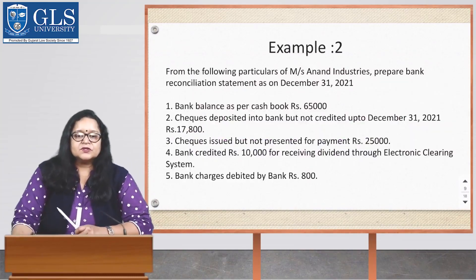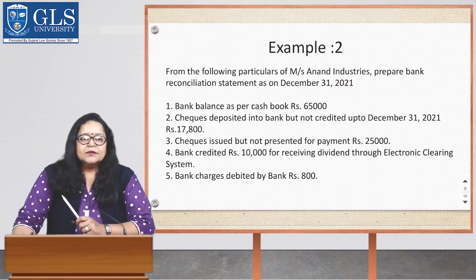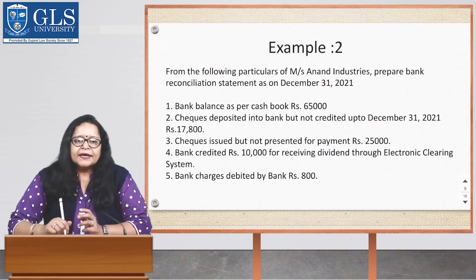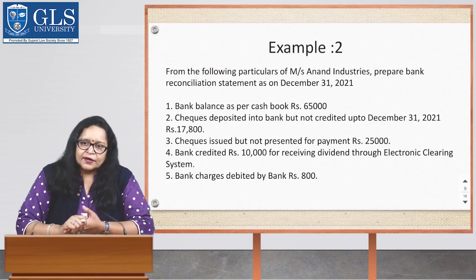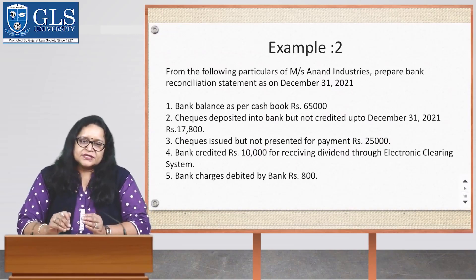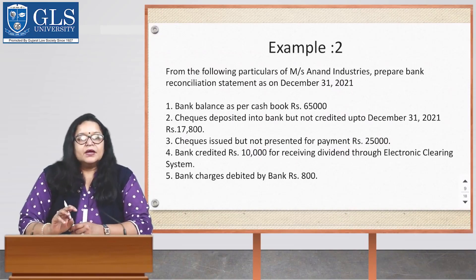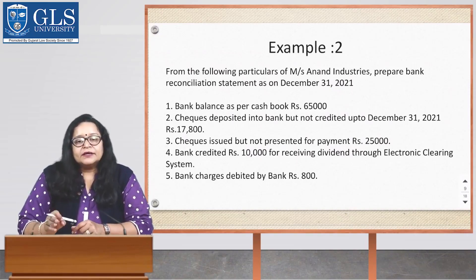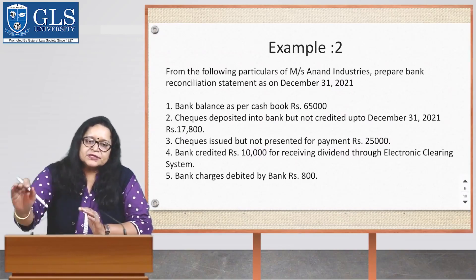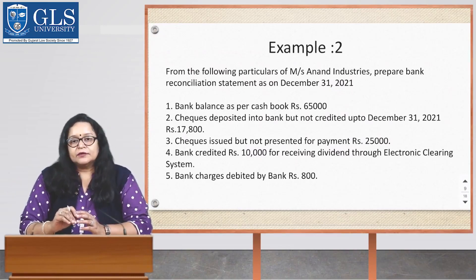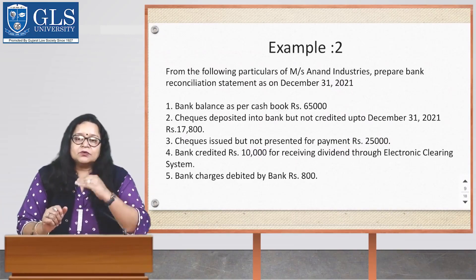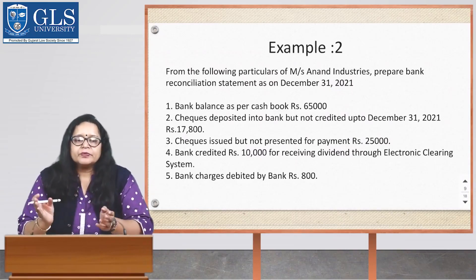Example 2: From the following particulars of Mrs. Anand Industries, prepare a bank reconciliation statement as on 31st December 2021. Bank balance as per cashbook is Rs. 65,000, so we start with that. Checks deposited into bank but not credited up to 31st December: Rs. 17,800 — since the check is not cleared, our balance would be lower, so we deduct it. Checks issued but not presented for payment: Rs. 25,000 — since the party hasn't deposited the check, our balance is higher, so we add it.